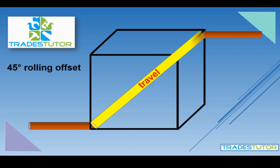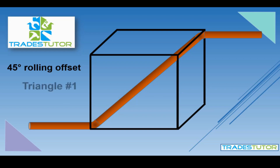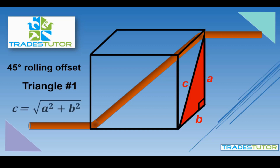We call that distance the travel — what is that distance from one side to the other. Although this may seem complicated, it's actually quite straightforward and relies on figuring out two triangles. Triangle number one has sides A, B, and C. This is a right triangle, so we use the Pythagorean theorem: A squared plus B squared equals C squared. Solving for C gives us C equals the square root of A squared plus B squared.